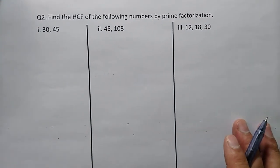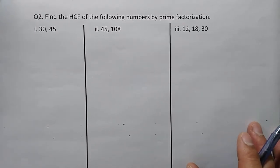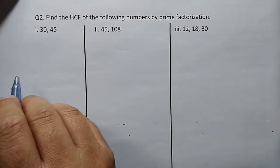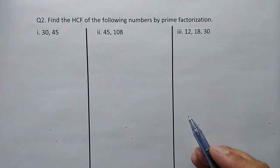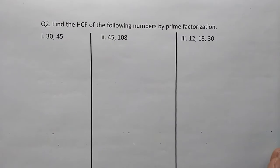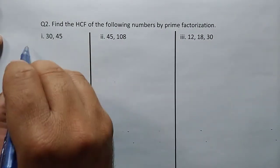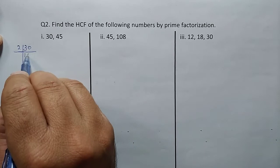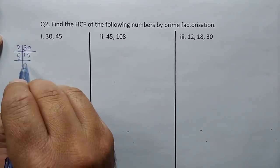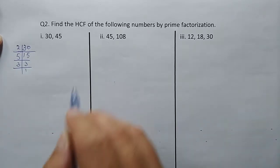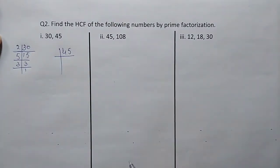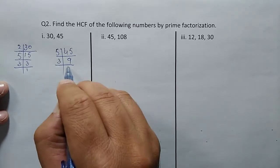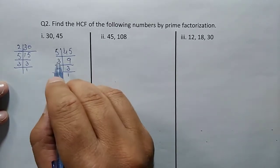Now finding the prime factorization of the following numbers. Prime factorization is used to find the highest common factor. We will do the prime factorization of 15 and 45. For 15: five and three. For 45: five, three, and three — so three squared times five.